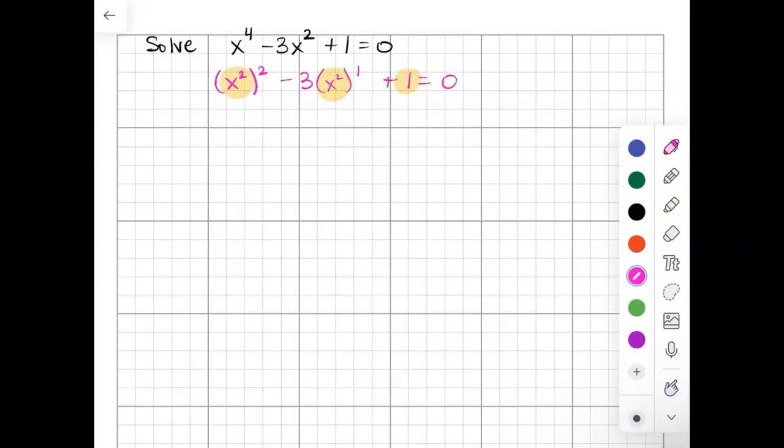That means we can do the quadratic formula if we've got 2, 1, 0 as our exponents. We're going to do x equals negative b plus or minus square root of b squared minus 4ac, all over 2a.